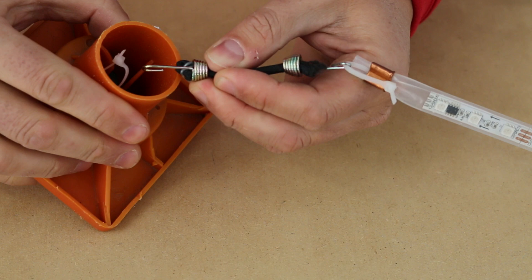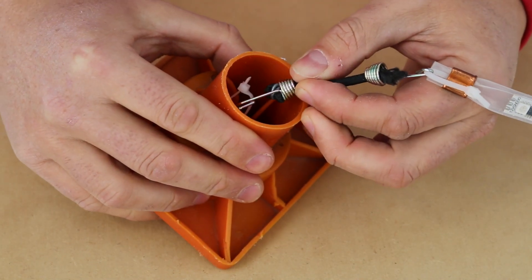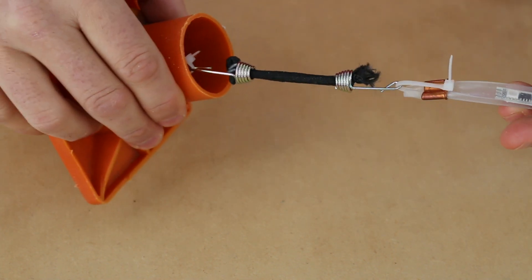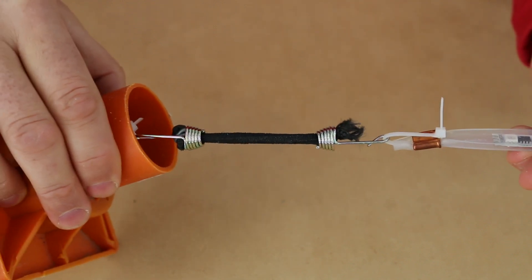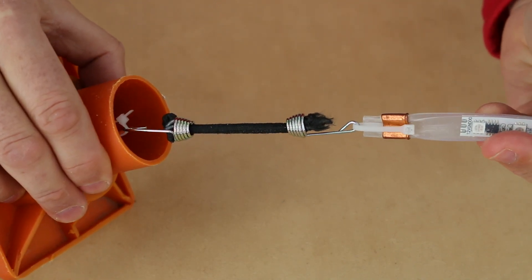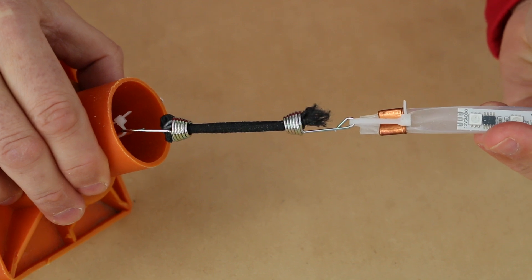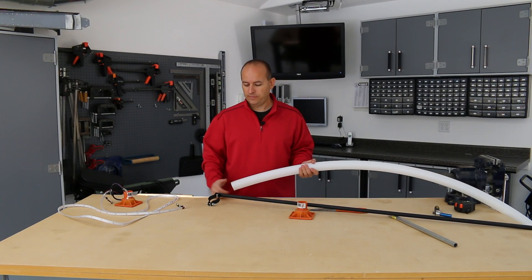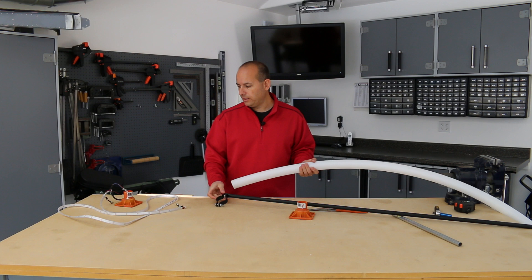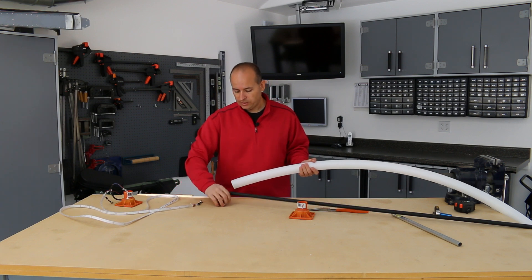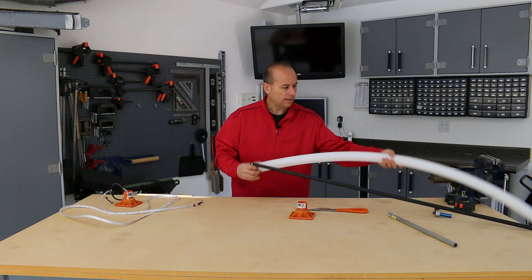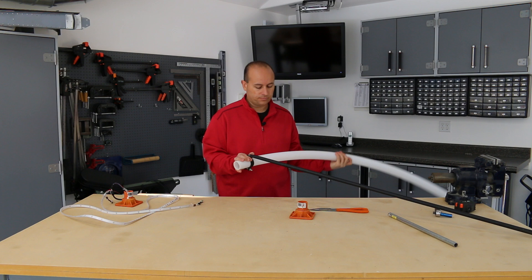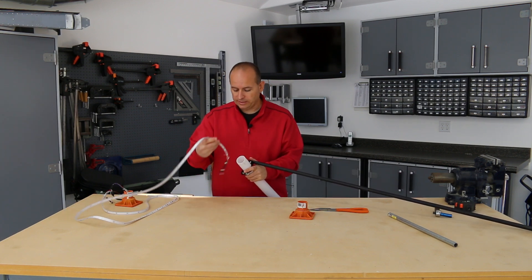This will now create a tension to hold the pixel strip taut inside the tube so it won't flop around. Once you have the crossmember bolted together and everything's ready, you then put the crossmember onto the end of the tubing like so and you feed the light strip into the tube.